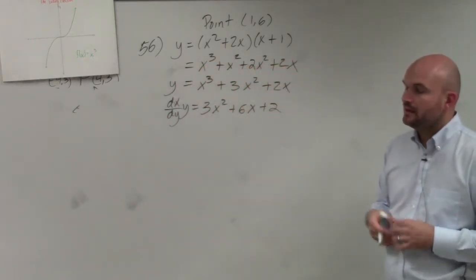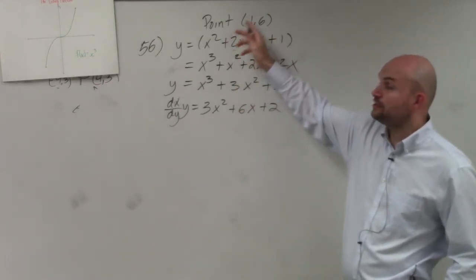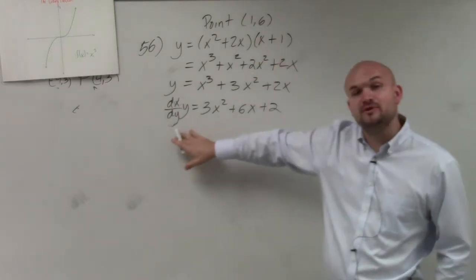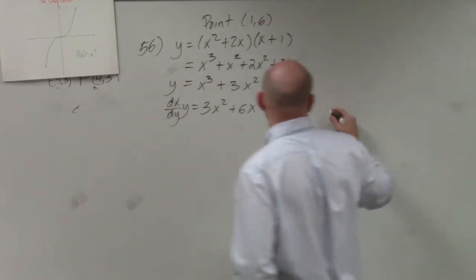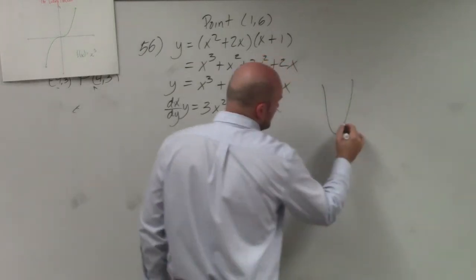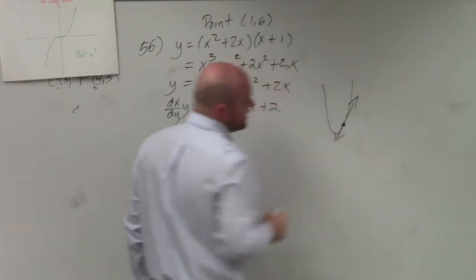OK? Now again, that's my derivative. But what they're looking for is finding the equation line through that point. Remember, the derivative is the slope at that point. So whatever this function looks like at the point (1, 6), we're looking for the slope. We're looking for that equation of the line.